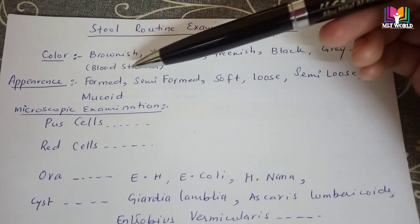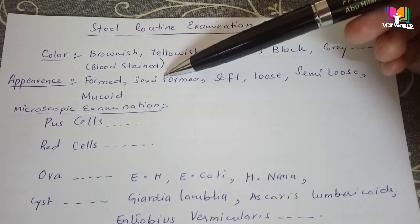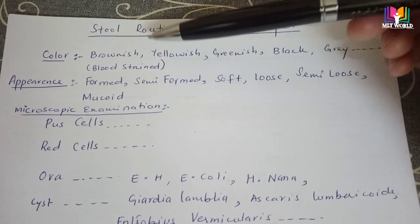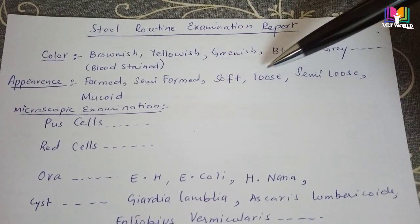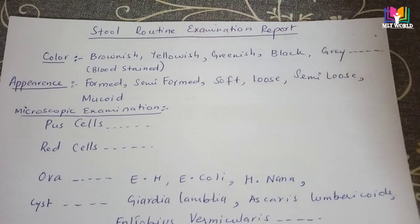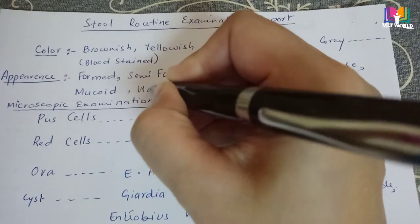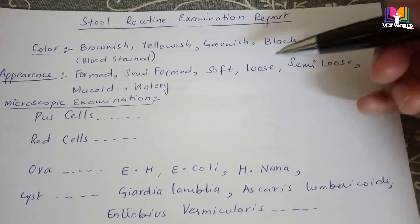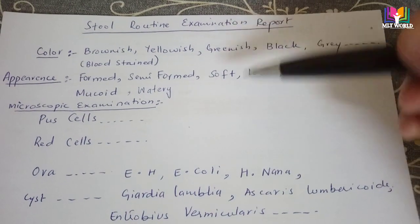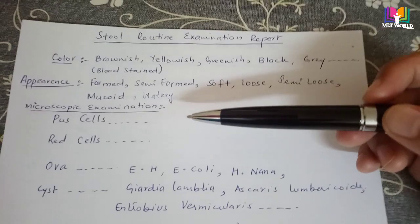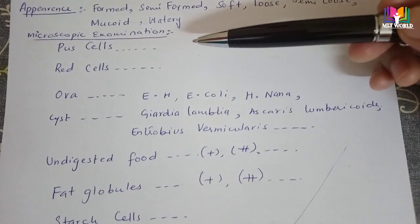Next is the appearance of the stool. When making the smear, check if the stool is formed, semi-formed, soft, loose, semi-loose, or mucoid — whatever the consistency or appearance is, you have to mention it. If it is more loose, like watery, you write 'watery'. You can write either 'appearance' or 'consistency'.